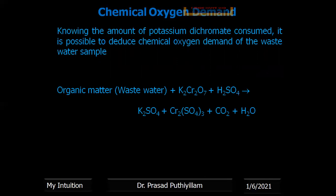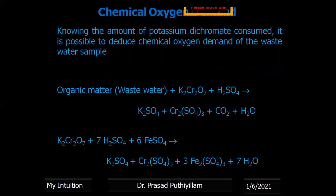The organic matter in wastewater reacts with K2Cr2O7 (potassium dichromate) in sulfuric acid medium to give K2SO4 and Cr2(SO4)3 — potassium dichromate is reduced while the organic matter is oxidized to carbon dioxide and water. The unreacted potassium dichromate is estimated by reacting with ferrous ammonium sulfate (FeSO4): K2Cr2O7 + 7H2SO4 + 6FeSO4 → K2SO4 + Cr2(SO4)3 + 3Fe2(SO4)3 + 7H2O. Ferroin is used as the indicator.